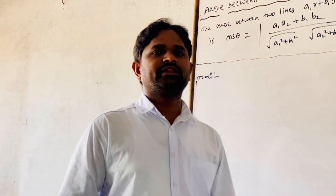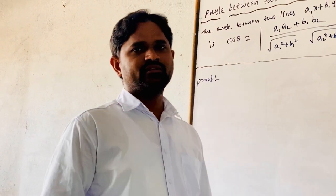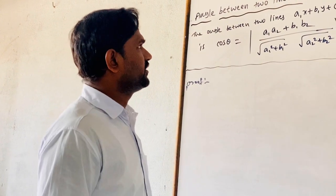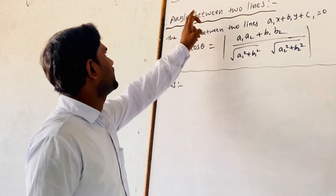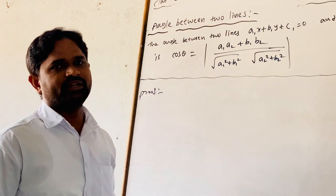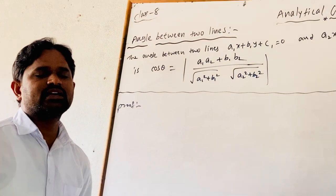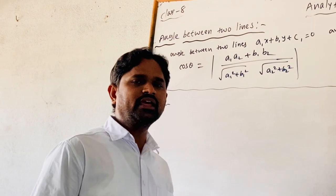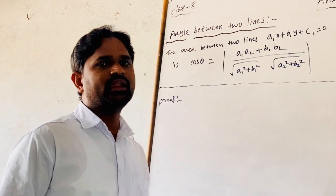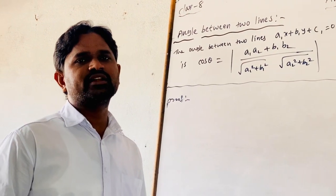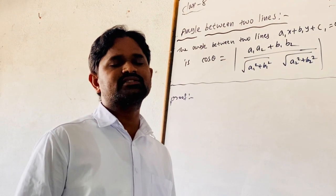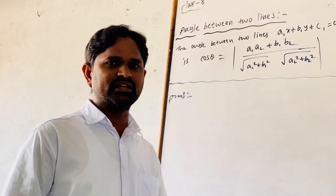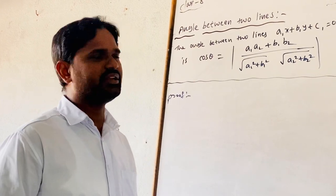Hi, good morning. Welcome to SSJ 80 classes. I am Basha, faculty of MASS. We are discussing the 80 class analytical geometry. In the previous class, we discussed different forms of a straight line and a line which divides given points — meaning points are on either side of the line or on one side of the line.